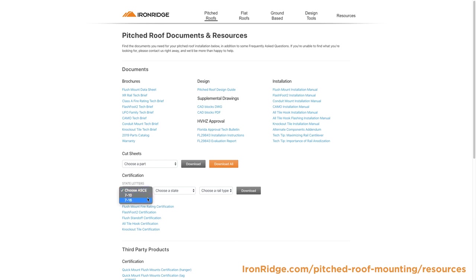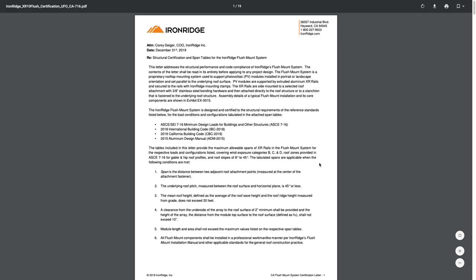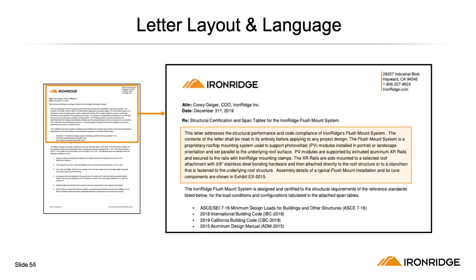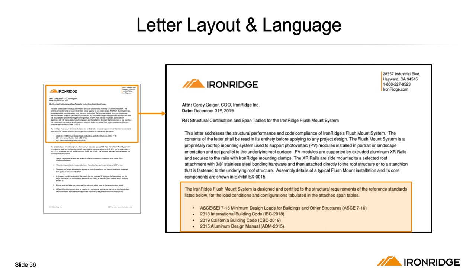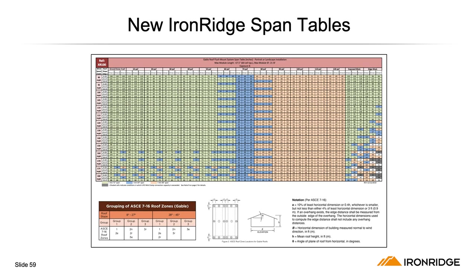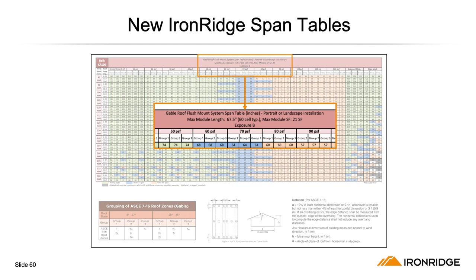You can locate new 716 letters on our website on the Pitched Roof Documents and Resources page. These letters are also available in Design Assistant. The first paragraph of the letter provides a description of the system and its application. Then we list relevant code references, and finally a list of design considerations, parameters, and allowed adjustments. Each table is based on the rail XR10, XR100, or XR1000, and there are different tables for gable and hip roofs, module size, and exposure category.